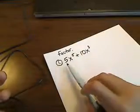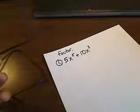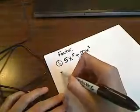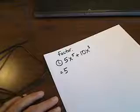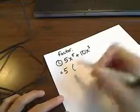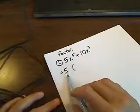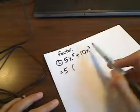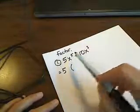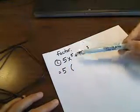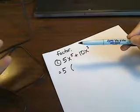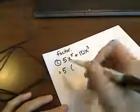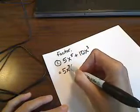You have to think about the numbers and the variables separately. For the numbers 5 and 10, they share 5 as a factor, so I'm going to pull out a 5 and write that on the outside of the parentheses — this is called factoring it out. For the variables, I have x to the fifth and x to the third; the biggest thing they share is x to the third, because x to the fifth contains x to the third plus two additional x's.